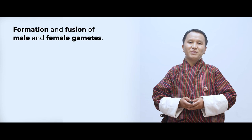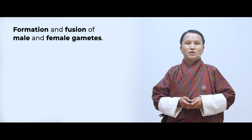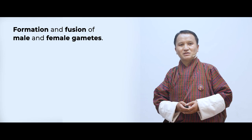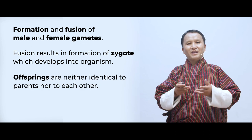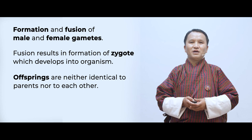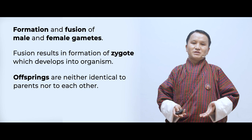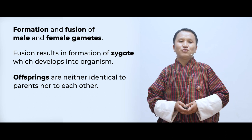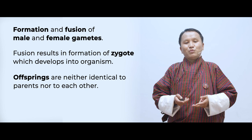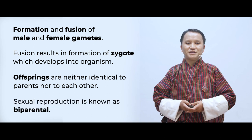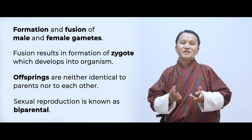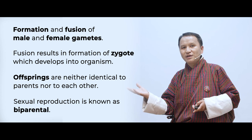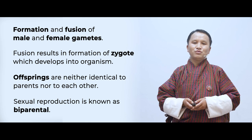We know that for fertilization to take place there should be fusion of male and female gametes. When there is fusion of male and female gametes it results in the formation of a zygote, which later develops into offspring in animals and into seeds or seedlings in plants. Sexual reproduction requires two parents — that is why we say organisms are bi-parental, requiring both father and mother, meaning plants require both a male part and a female part.